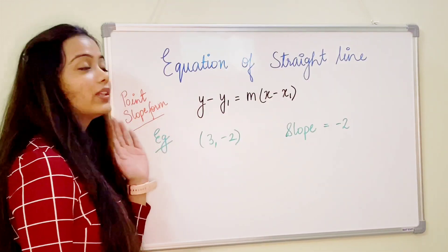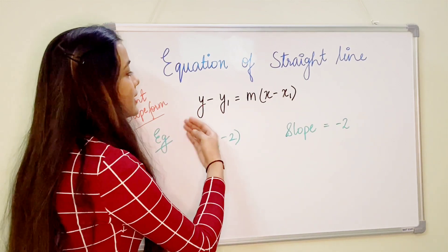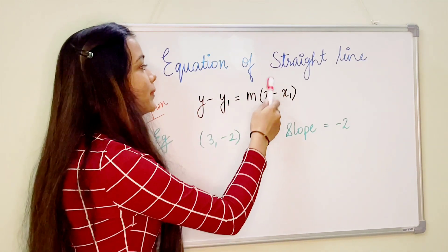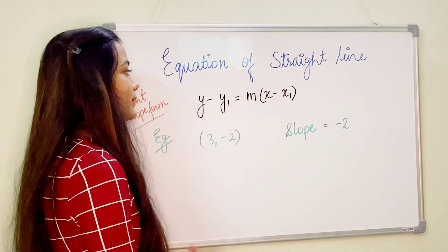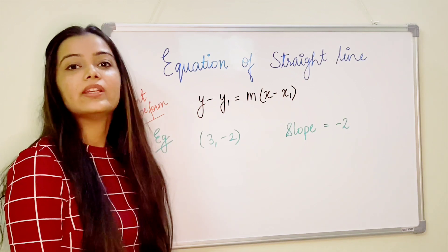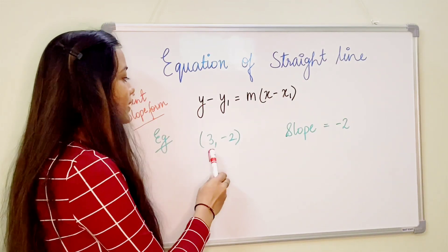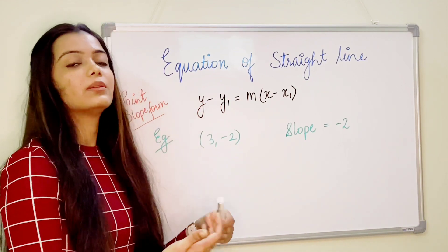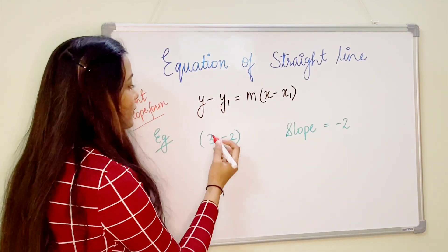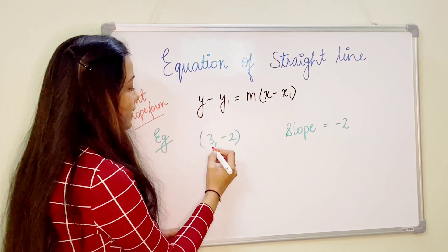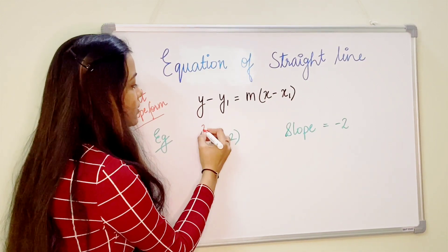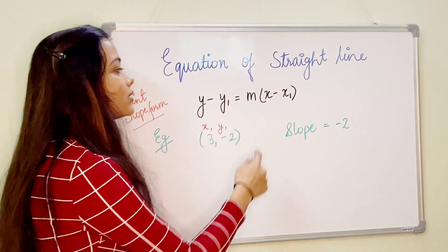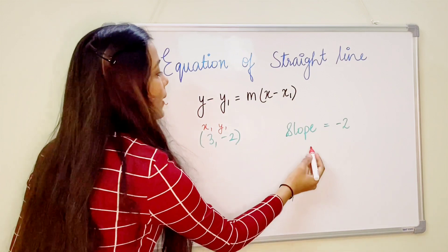Starting with the point-slope form. The point-slope form is expressed as y minus y1 equals m times x minus x1. This means that if we are given one point, say (3, -2), and also the slope, we can determine the equation of the straight line. We take x1 as 3, y1 as minus 2, and the slope is represented by m.